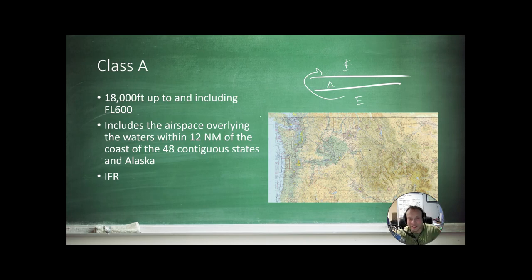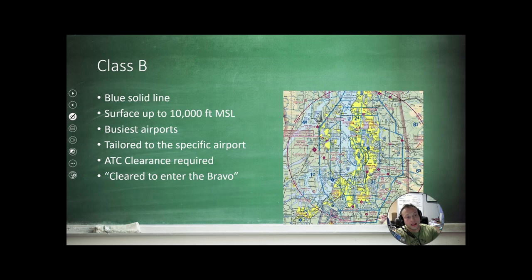So it goes from 18,000 to 600 and includes the airspace overlying the waters within 12 nautical miles of the coast of the 48 contiguous states and Alaska. You must be on an IFR flight plan to be in Class A airspace. Class B airspace, busy Boeing, is depicted by these solid blue lines. And this one here corresponds to SeaTac. It goes from the surface up to 10,000 feet MSL, and it overlays the busiest airports.